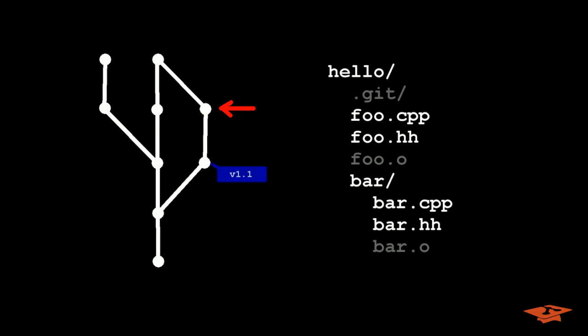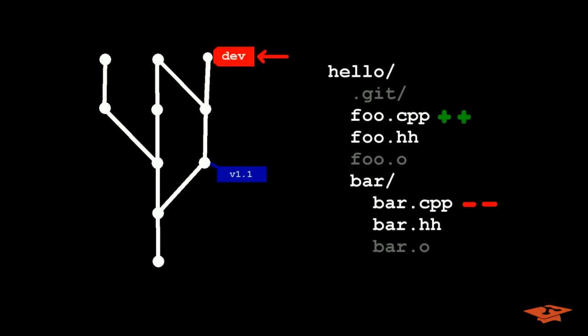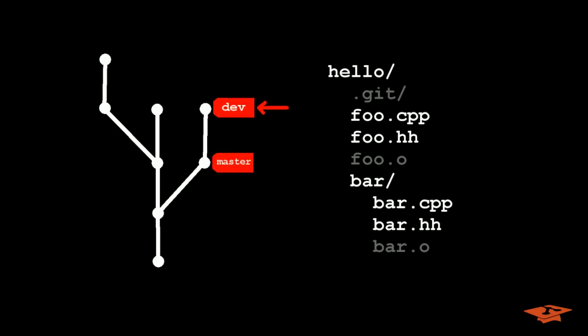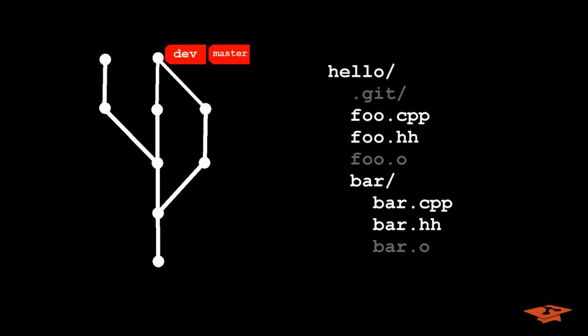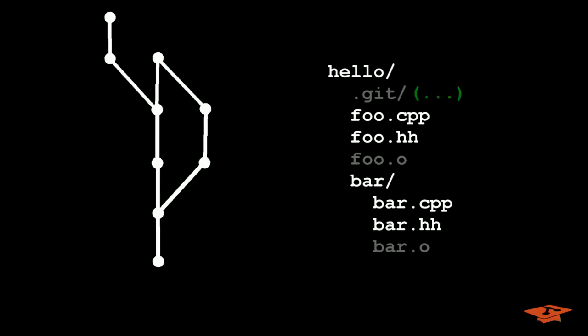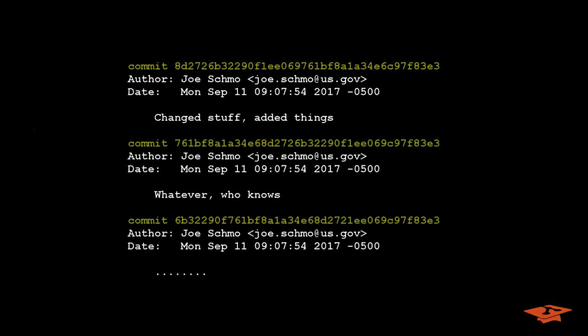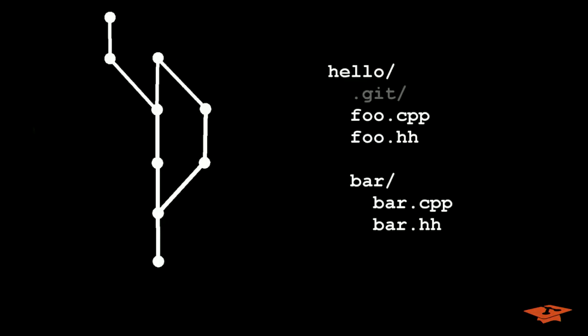This is a Git tag — it's a way to label a particular commit. This is a Git branch — it's a tag that moves when you make a commit on it. This is a non-fastforward Git merge. This is a fastforward Git merge. This is a Git rebase. This is a Git fetch. This is a Git cherry pick. This is a Git log. And this is a Git clean.